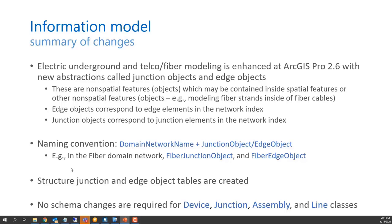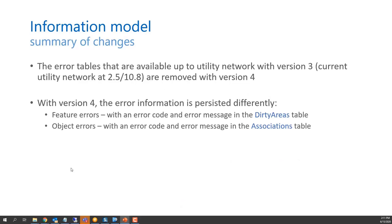You can see the naming convention: prefixed with the domain network name, then suffixed with either 'junction object' or 'edge object' — for example, in a fiber domain network you'd see 'fiber junction object' and 'fiber edge object.' Edge object tables and structure junctions are also being created. Importantly, there are no schema changes to your existing device, junction, assembly, or line classes.